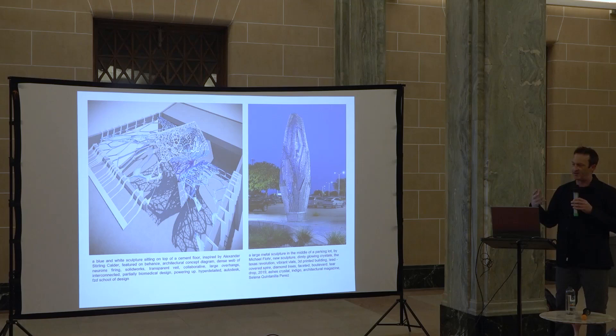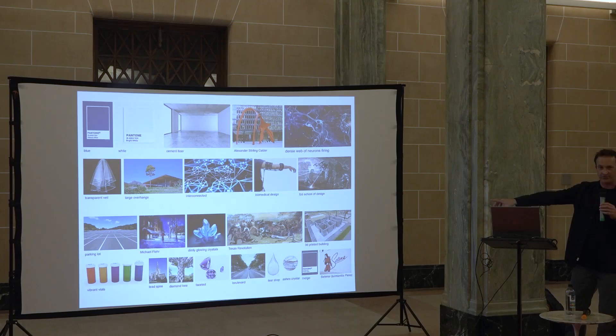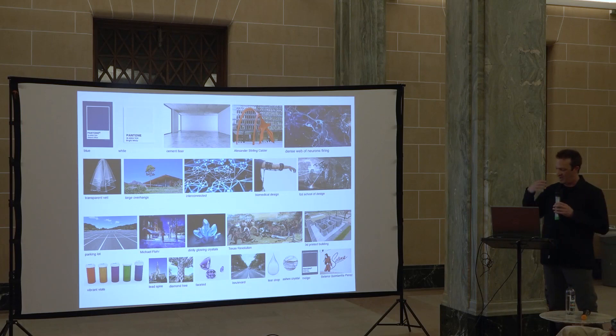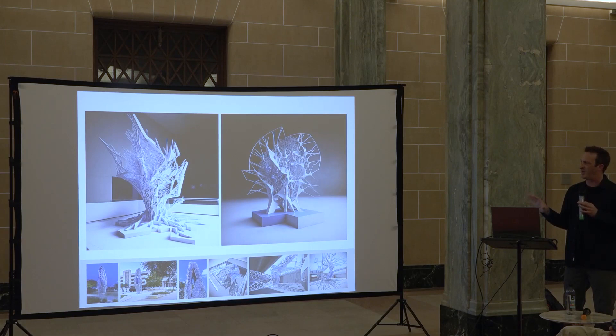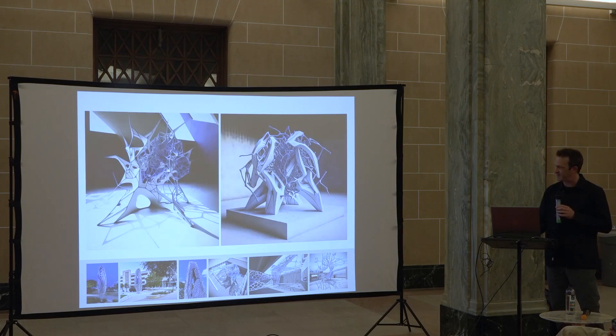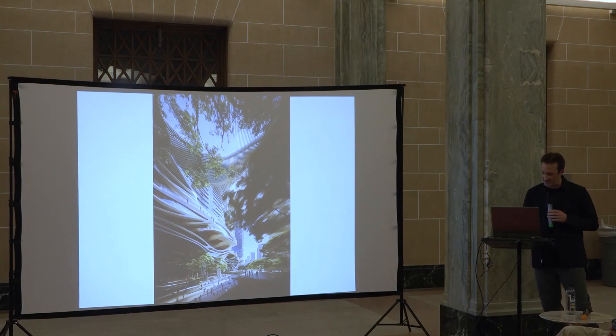We used a site called Hugging Face to analyze these images and tell us what text you would use to produce them. And it's not what you'd think — not the terms I would have used. For example, 'Texas Revolution' is what it came up with, 'Dimly Glowing Crystals,' 'Selena Perez, the Singer' — things I never would have associated with our architecture. This is the output of that text without any editing, no modifications, just plugging it back in. And I would say it's a pretty good hybrid of those two projects — you can certainly see elements of Plume and LumaFoil within this design.